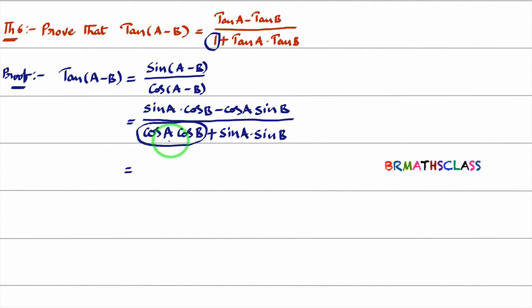How I will get 1 here? What I will do, this whole expression, numerator and denominator, I will divide with cos A cos B. When I divide with cos A cos B, here I will get 1. Rest of all the things will come automatically.